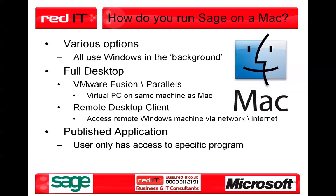So how do you run Sage on a Mac? There are various options available but all of them use Windows in the background. You have full desktop and published applications as your two main options. In a full desktop application you have something that pretends to have Windows on the same machine as the Apple Mac. There are two leading applications: one by VMware called Fusion and another one called Parallels. Your machine is actually running two different operating systems simultaneously.